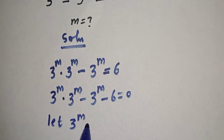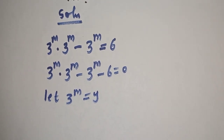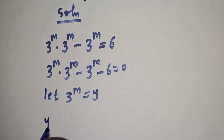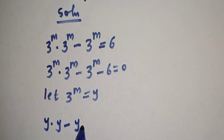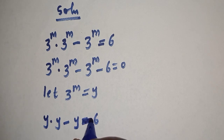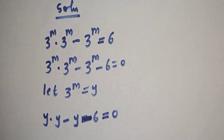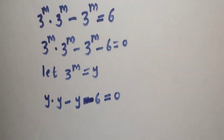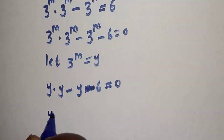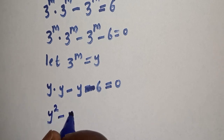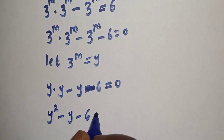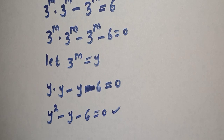Let 3 raised to power m equal y. This gives us y multiplied by y minus y minus 6 equals 0, which simplifies to y squared minus y minus 6 is equal to 0. This is a quadratic equation.